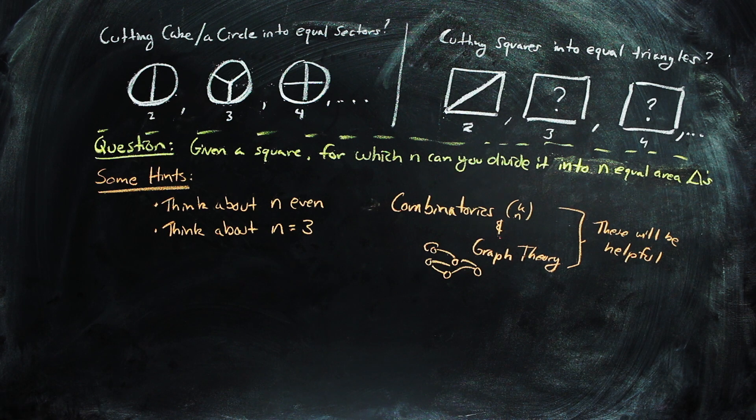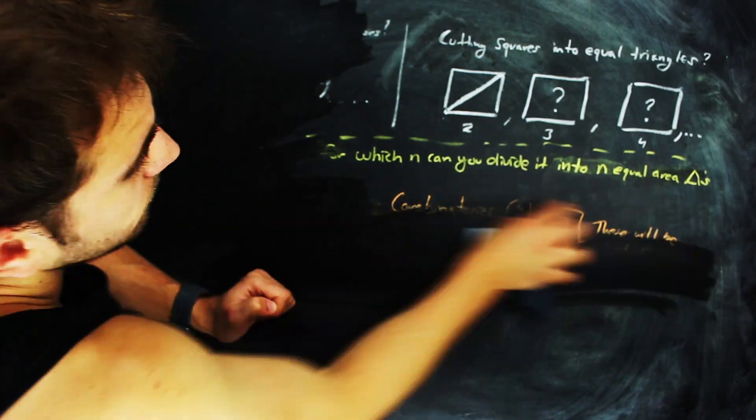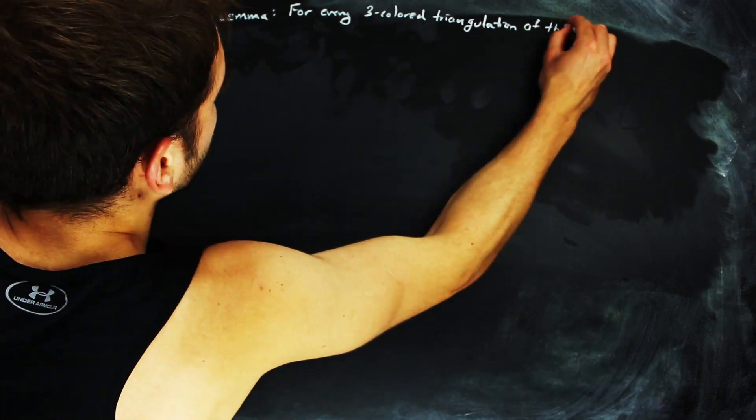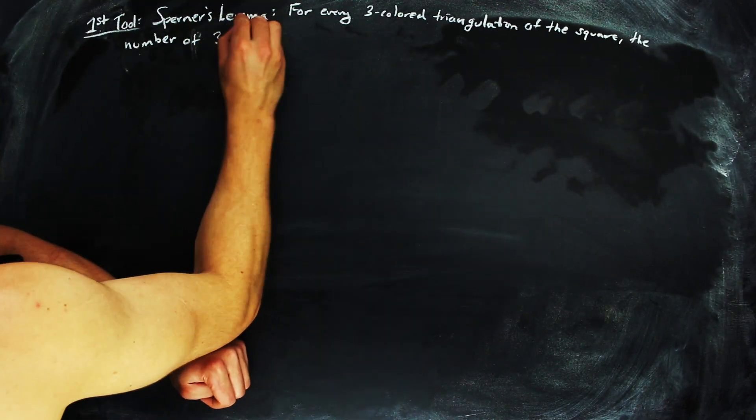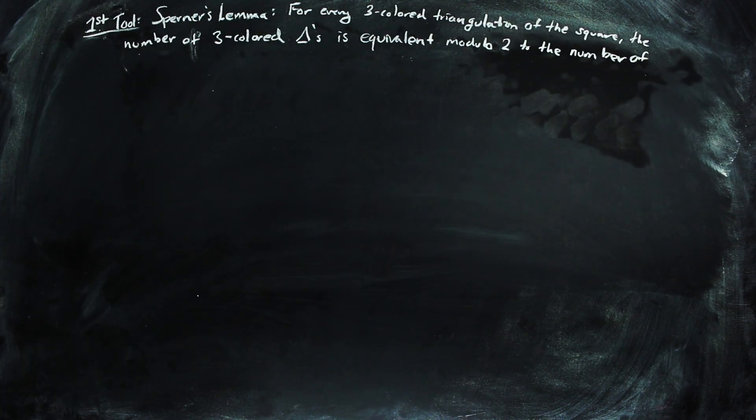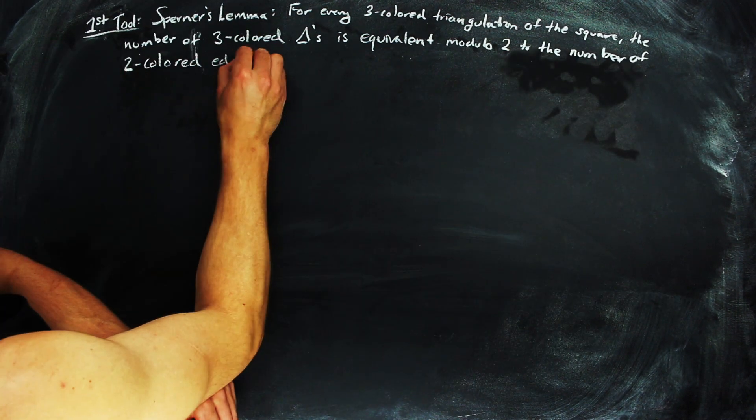Okay, so if you've taken some time and still can't figure it out, or if you just want to know what the answer is, we'll get there, but we're going to have to start with something called Sperner's Lemma. In the two-dimensional case, it states that for every three-colored triangulation of a square, the number of three-colored triangles is equivalent modulo 2 to the number of two-colored edges of a certain type on the perimeter.